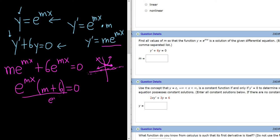So you can just divide by it, and it goes away. You get m plus 6 equals 0, and so we end up with m equals negative 6. And that would be the answer to the problem.